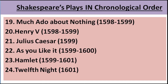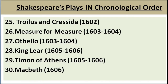The 24th play is Twelfth Night, written in the year 1601. Moving to the 25th play, Troilus and Cressida, written in the year 1602. Next, the 26th, Measure for Measure, 1603 to 1604. The 27th is Othello, written in the year 1603 to 1604. The 28th was King Lear, written in the year 1605 to 1606. The 29th was Timon of Athens, written in the year 1605 to 1606.